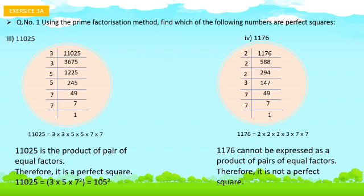Let's take the number 1,176. The prime factorization gives factors of 2 × 2 × 2 × 3 × 7 × 7. Since two factors — the extra 2 and the 3 — are unpaired, it cannot be expressed as a product of pairs of equal factors. Therefore, 1,176 is not a perfect square.